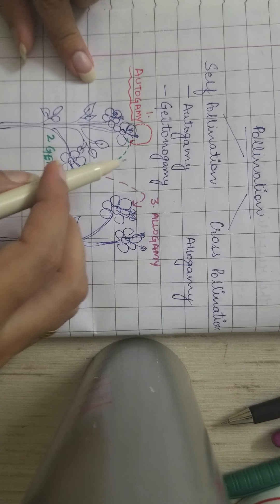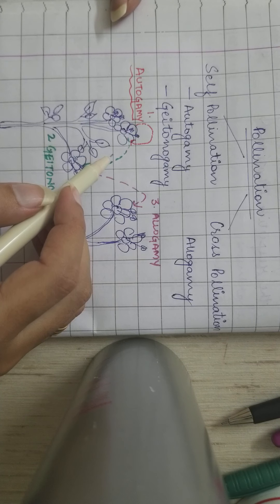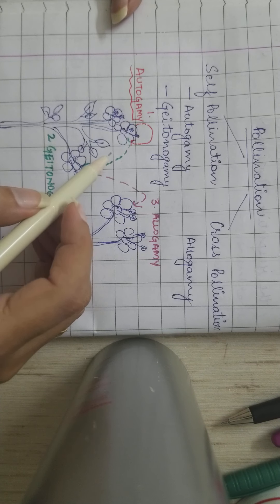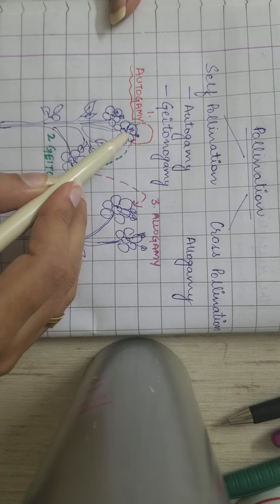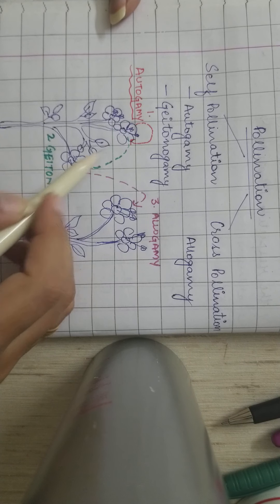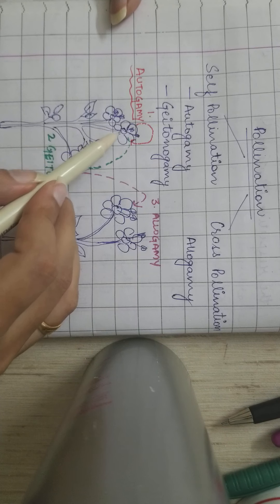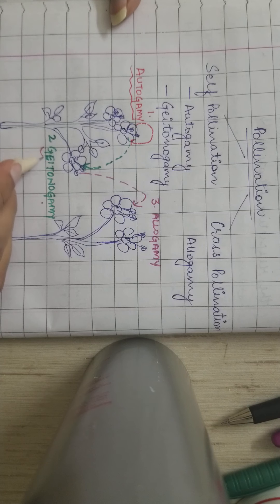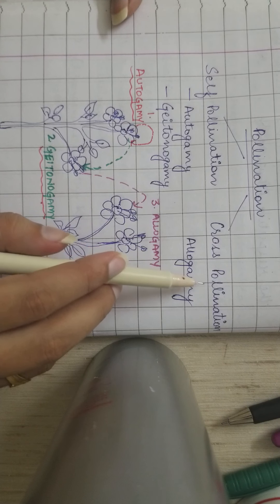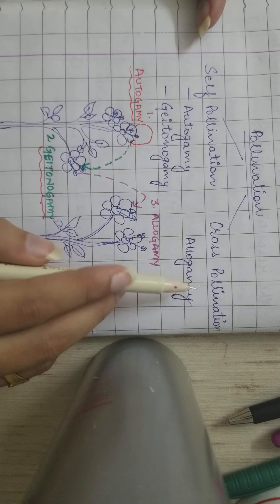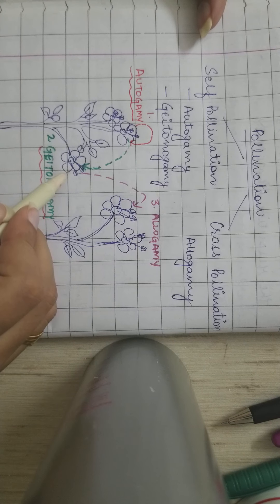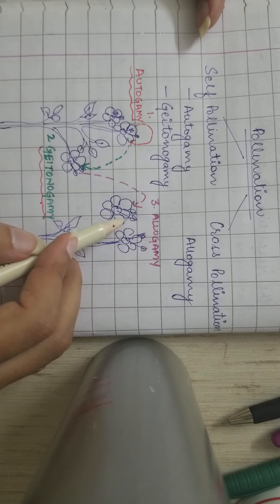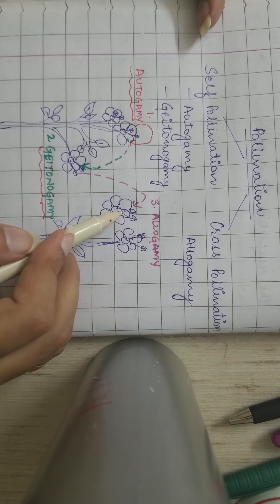The next type is geitonogamy. In geitonogamy, the pollen grains of one flower fall on the stigma of another flower, but the plant is the same — flowers are different, plant is same. Cross-pollination is also known as allogamy. In allogamy, the pollen grains from one flower of one plant fall on another flower of another plant, but of the same species — species have to be same.